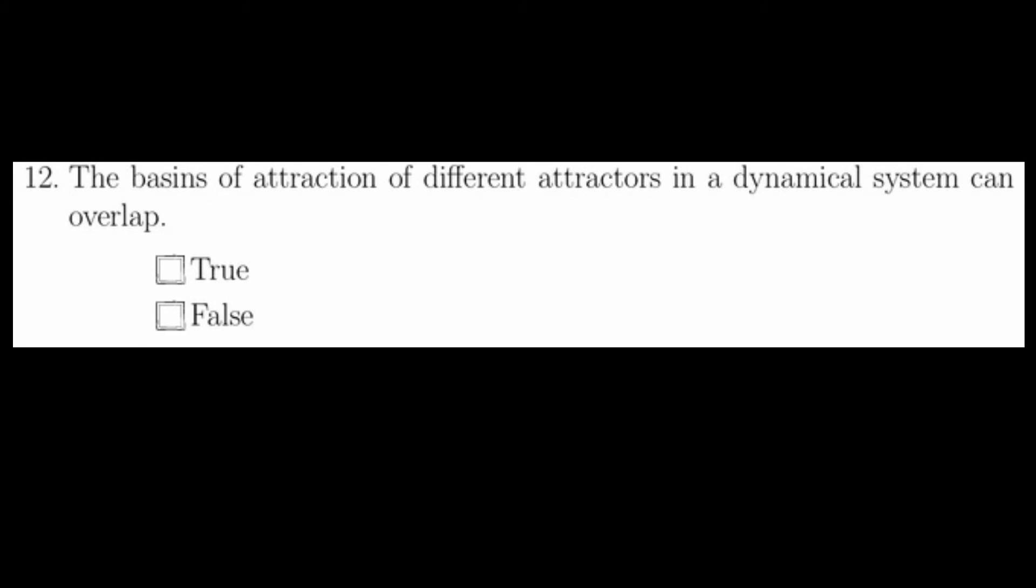Number twelve states that the basis of attraction of different attractors in a dynamical system can overlap. This is false. If this were the case, then an initial condition lying in the intersection of these basins of attraction could go to two different places. This is not the kind of dynamical system we're studying.